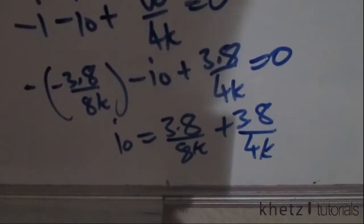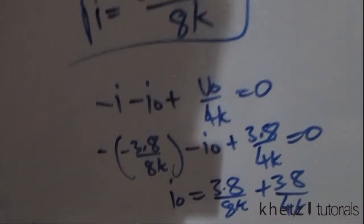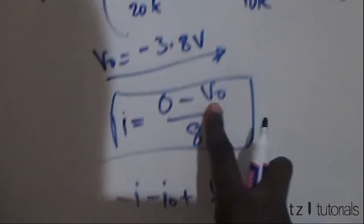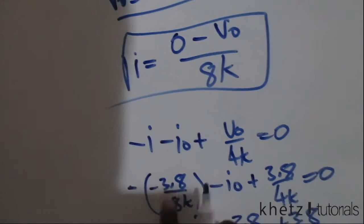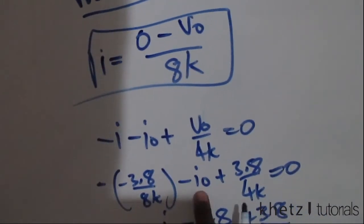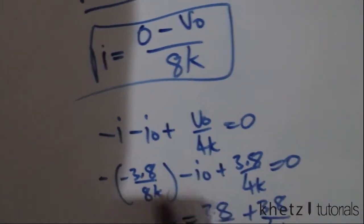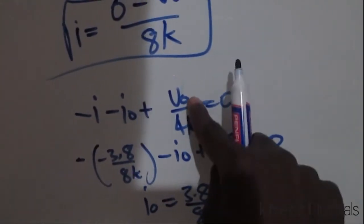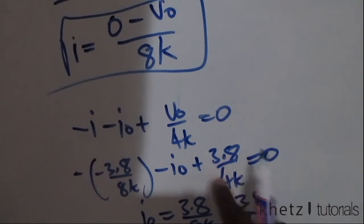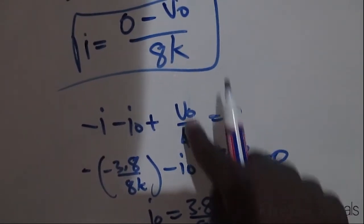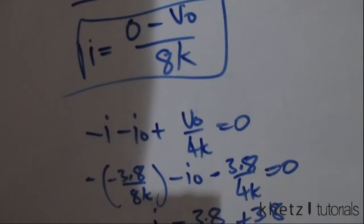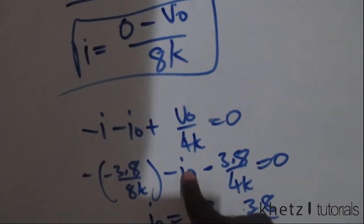Now if you look here, I made a slight error because the value of vo is negative. So if we say negative of that, that is fine. This is going to be positive, so you're going to have 3.8 divided by 8k after taking this to the other side. That is fine. But at this point, substituting vo, we're going to substitute a negative, which means you're going to have that.